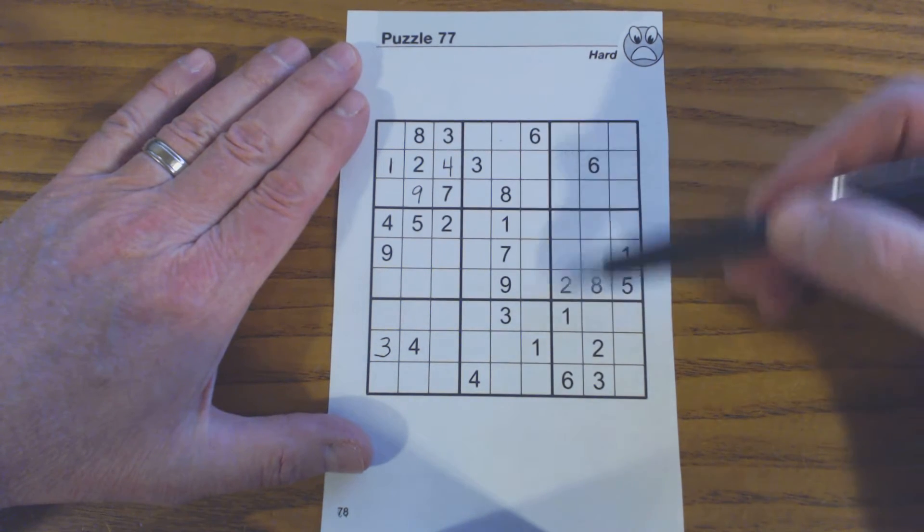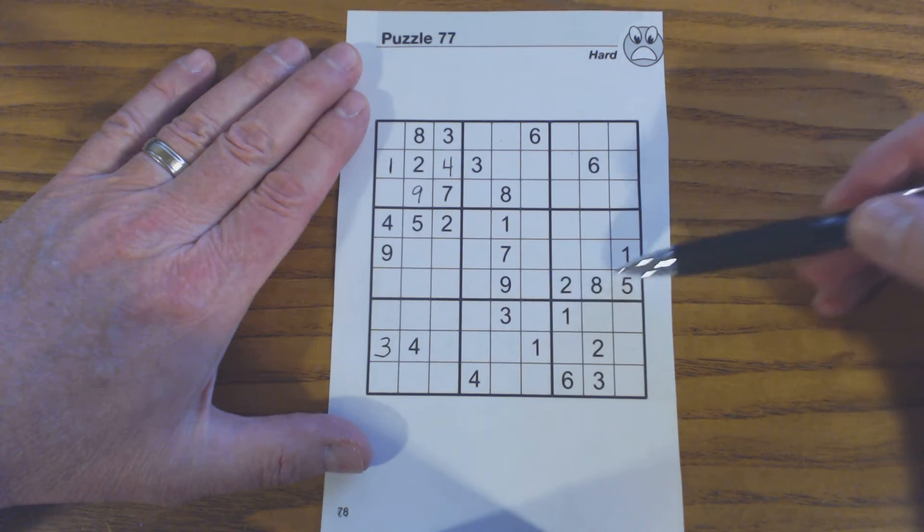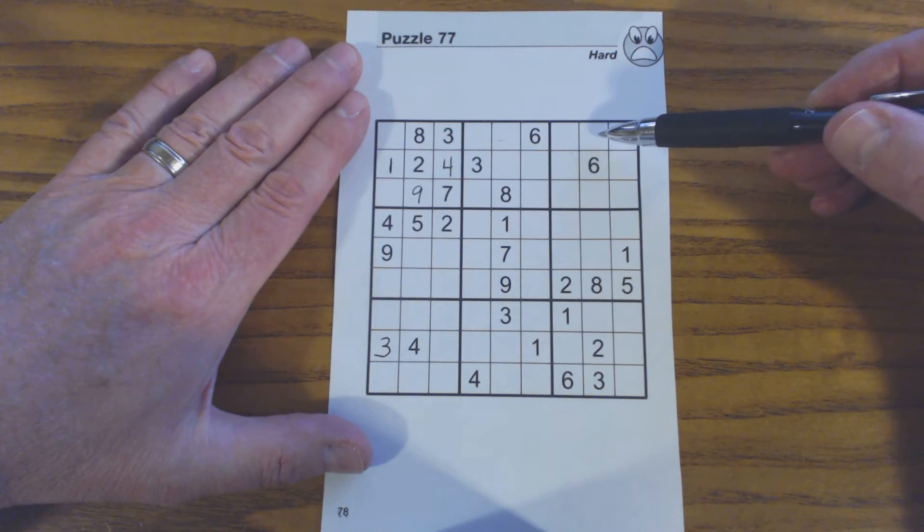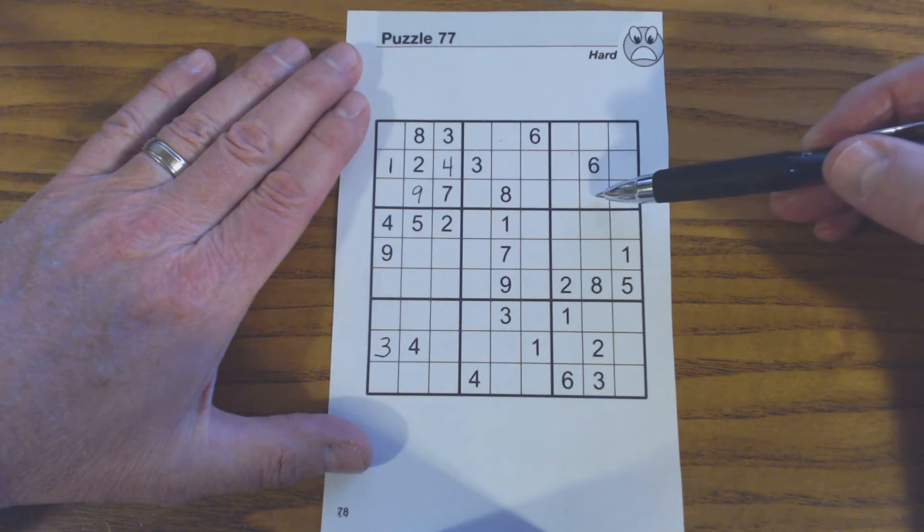You notice in this section column one has a one, column three has a one, so column two in this square needs to have a one in it in row one or row three.